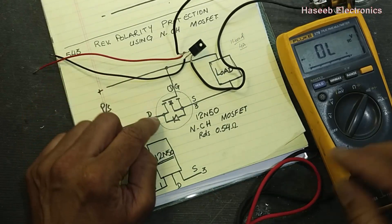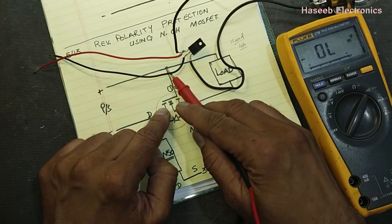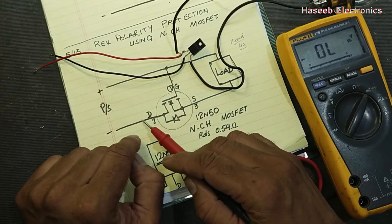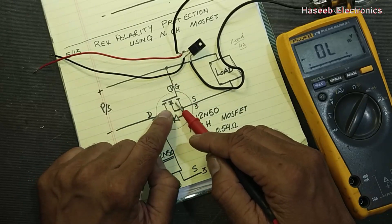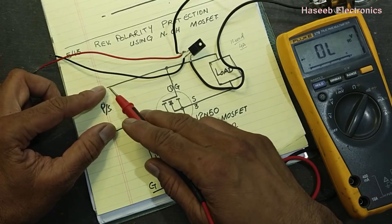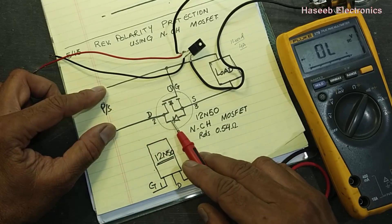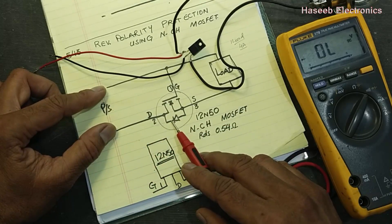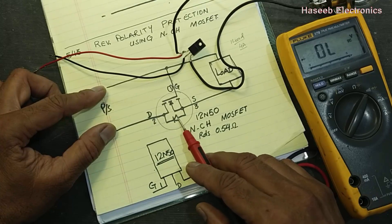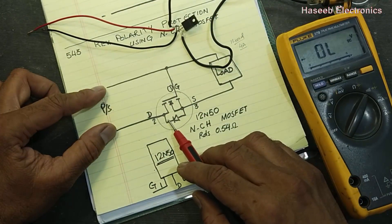This diode will become forward bias here, and initially it will provide the path, and then we will apply positive voltage here so that this MOSFET will switch on. If we reverse the polarity, negative here, positive here, at that time if we see positive voltage at this cathode, it will reverse bias.